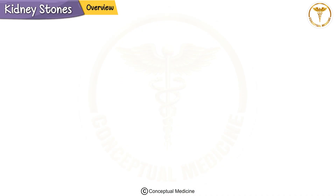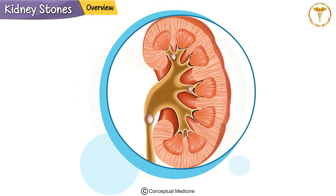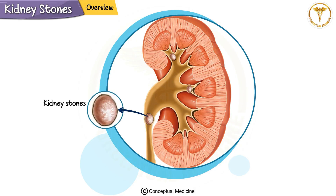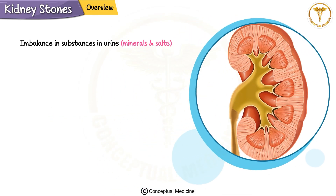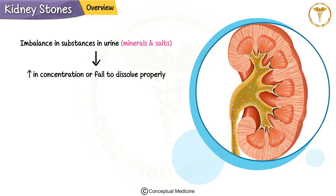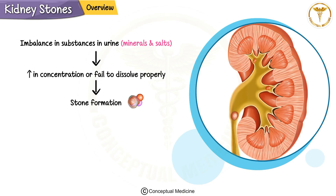Hello, today we're going to learn about kidney stones, an important topic in both clinical practice and your exams. Kidney stones, also known as renal calculi, are solid crystal formations that occur in the kidneys. These stones form due to an imbalance in substances in urine — like minerals and salts — which either increase in concentration or fail to dissolve properly, resulting in stone formation.